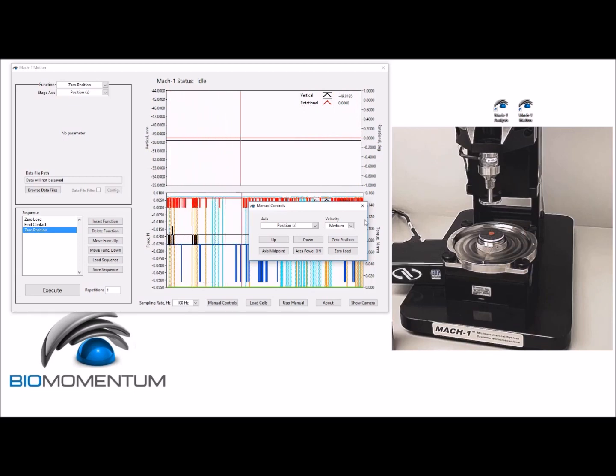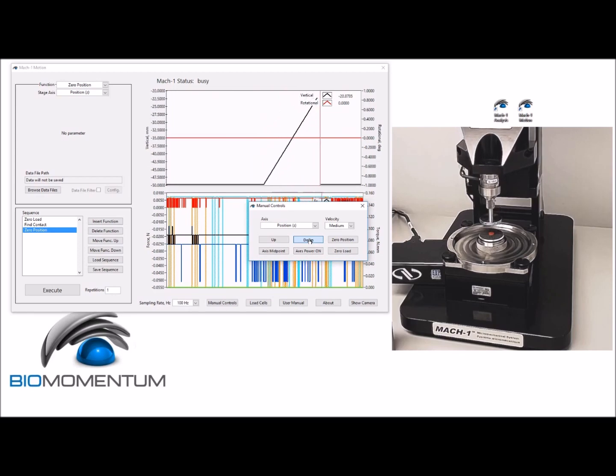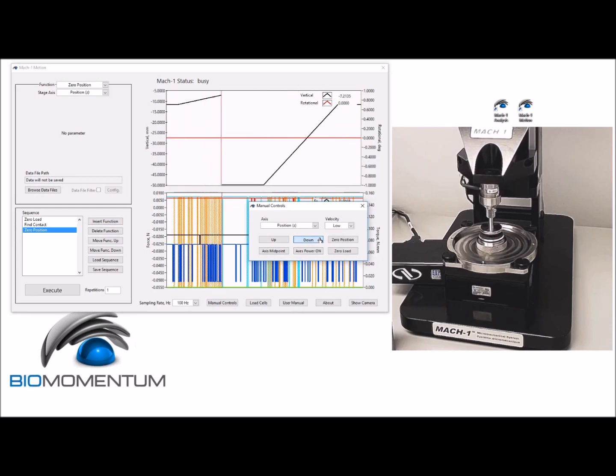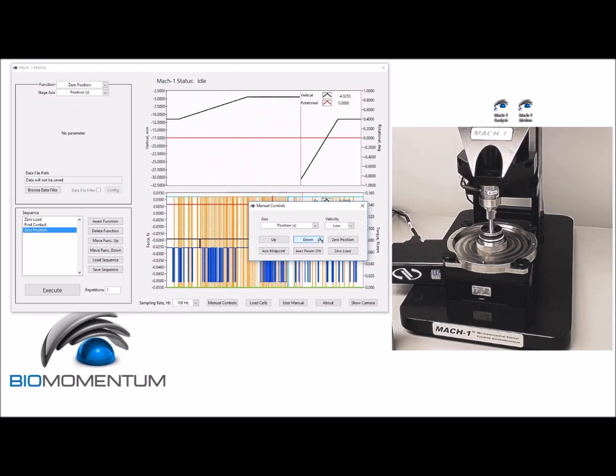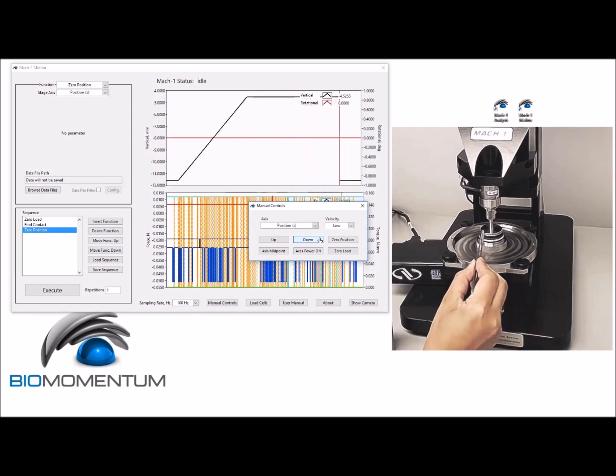Lower the stage at medium speed to approximately 20 millimeters above the sample, and lower the stage at low speed to approximately 2 millimeters above the sample. At this point, verify sample alignment with the center axis by using...